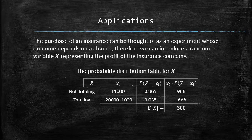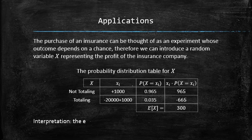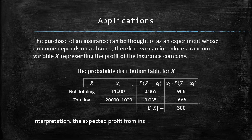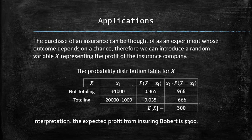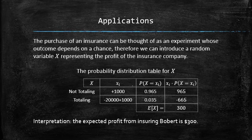So what does this number mean in the context of this problem? We interpret the mean as the average profit of the insurance company from insuring drivers just like Bobbert. In other words, from insuring 1,000 people like Bobbert, the insurance company would expect to make $300,000.